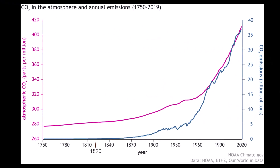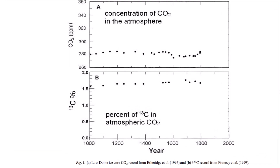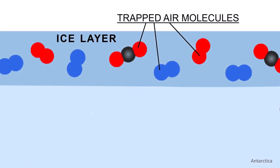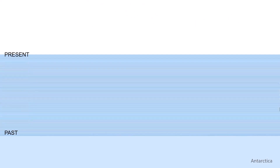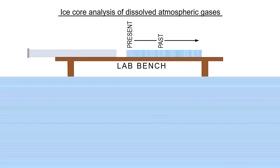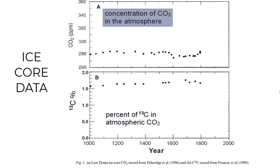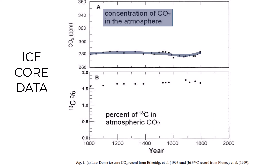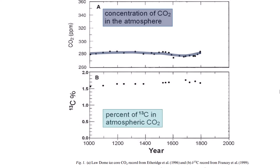We can see in this graph, starting about 1820, that carbon dioxide emissions, the blue line, begin to increase. This graph from these studies gives us ice core data of the past 1,000 years. In the Antarctic, a layer of ice forms every year on top of the previous year's ice, trapping dissolved air as the liquid water freezes. The deeper the ice core sample, the further back in time. We can see here the concentration of carbon dioxide in the atmosphere remains fairly constant at about 280 parts per million, or about 0.028% of total air molecules, until about 200 years ago. The graph at bottom shows the percent of carbon-13 in total atmospheric carbon dioxide, which again remains fairly constant at 1.6% of total carbon dioxide, until about 200 years ago.